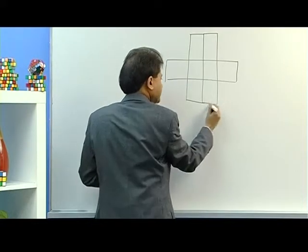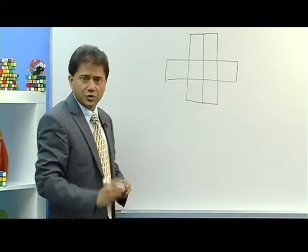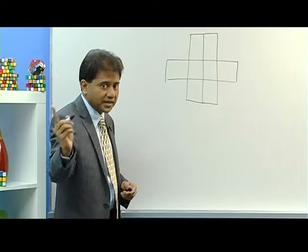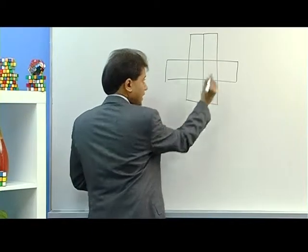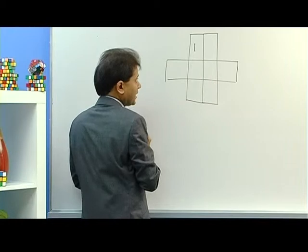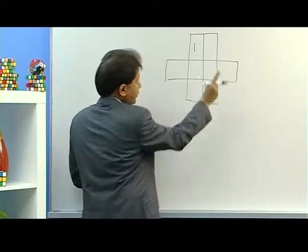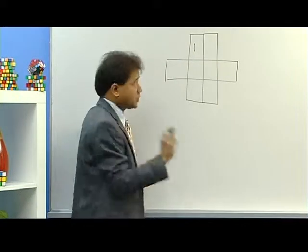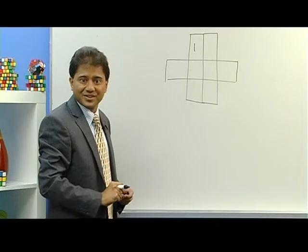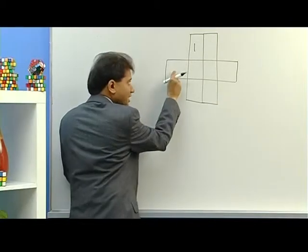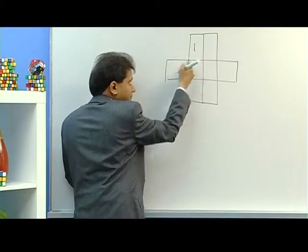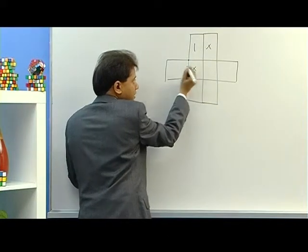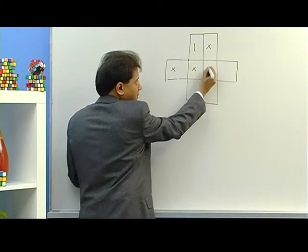You see eight squares in the diagram. You have to fit numbers from one to eight such that no two consecutive numbers are next to each other. For example, if you put a one somewhere, two cannot be placed in any adjacent square — it cannot come here, here, or here, because they all touch each other.